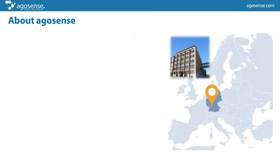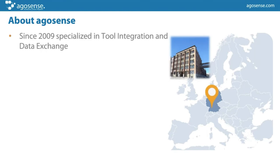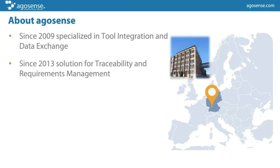A few words about Argosense. We founded the company in 2009 and specialized right away in the area of tool integration and external data exchange. In 2013 we decided we should not have a single product strategy, so out of the experience from all our integration projects, we had the impression that there was still a good product needed in the area of requirements management and traceability — so that was the reason we created a product in that area as well.